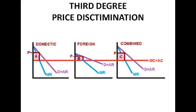If we had everything sold at the same price P, that would bring in less profit than selling at price A domestically plus price B abroad, because that's sold at two different levels. We've got more elastic demand abroad, so price B is obviously lower than the domestic price.